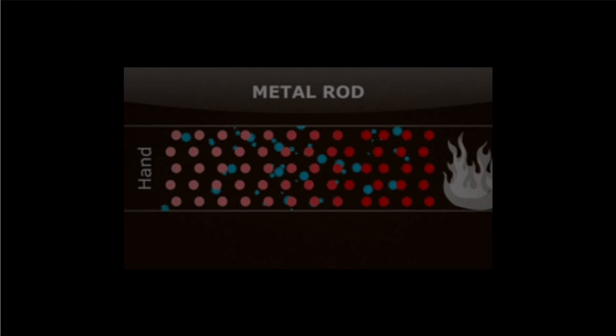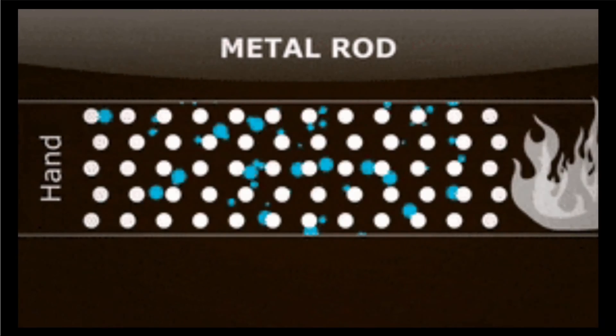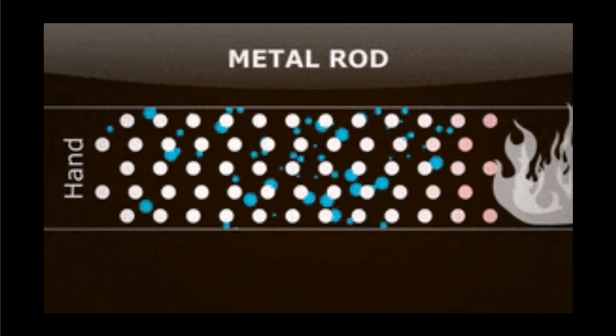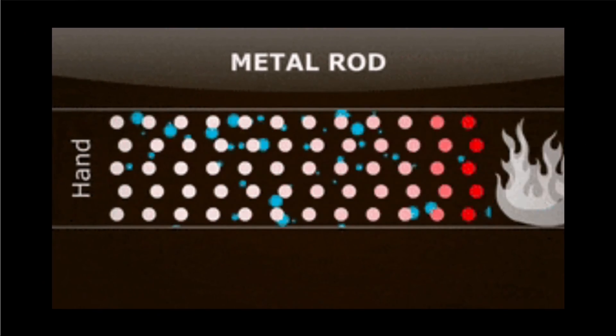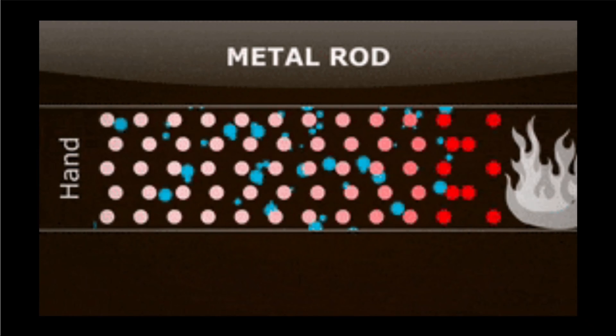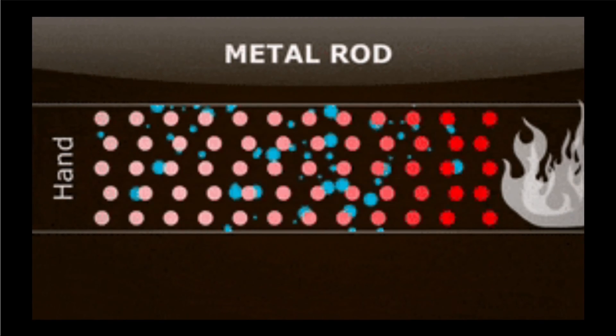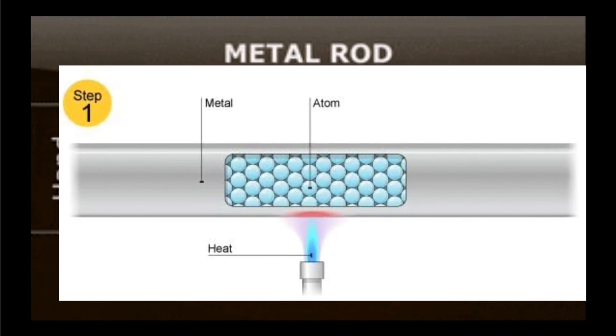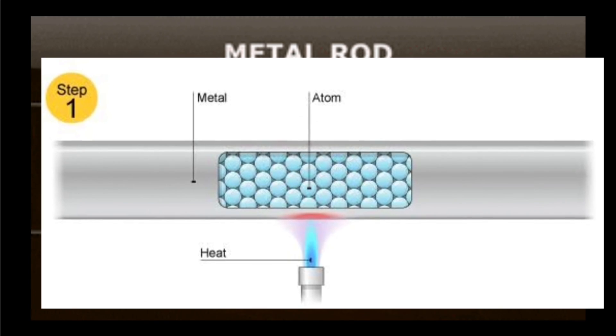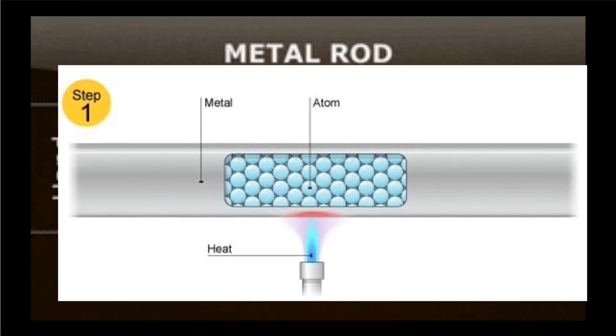Now when we heat the conductor, the atoms of the conductor absorb the heat energy. As a result, their vibration increases. Due to this increase in vibration, the collision of electrons with the atoms also increases and hence it becomes very difficult for the electrons to move across the conductor and hence the resultant output current decreases.